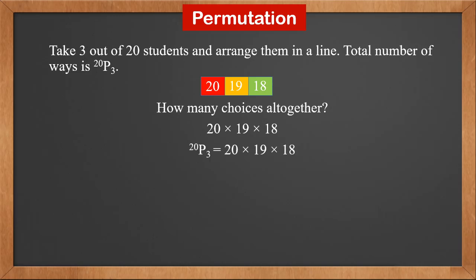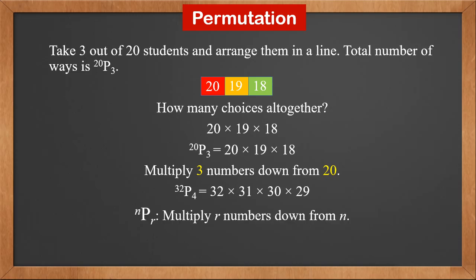Therefore, 20P3 is 20 times 19 times 18. That is multiply three numbers down from 20. Applying the same rule, we can know that 32P4 is multiply four numbers down from 32, which is 32 times 31 times 30 times 29. Therefore, NPR is multiply R numbers down from N and that is N times N minus 1 times N minus 2, all the way to N minus R plus 1.